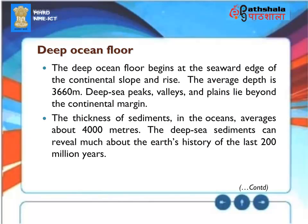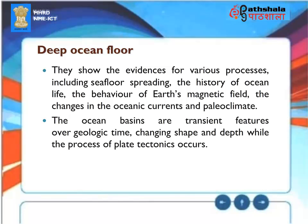Deep Ocean Floor: The deep ocean floor begins at the seaward edge of the continental slope and rise, with an average depth of 3,600 meters. Deep sea peaks, valleys, and plains lie beyond the continental margin. The thickness of sediments in the oceans averages about 4,000 meters. Deep sea sediments reveal much about the Earth's history over the last 200 million years, showing evidence for seafloor spreading, ocean life history, Earth's magnetic field behavior, changes in oceanic currents, and paleoclimate. Ocean basins are transient features that change shape and depth through plate tectonics.